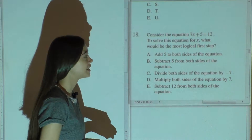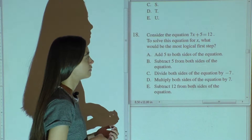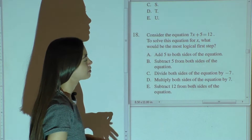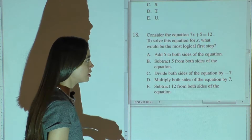Consider the equation 7x plus 5 equals 12. To solve this equation for x, what would be the most logical first step?